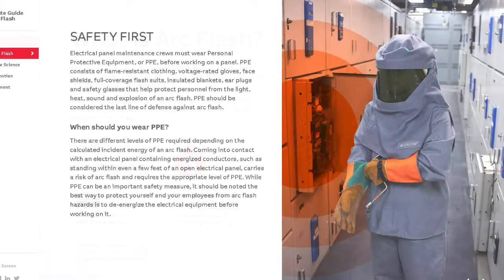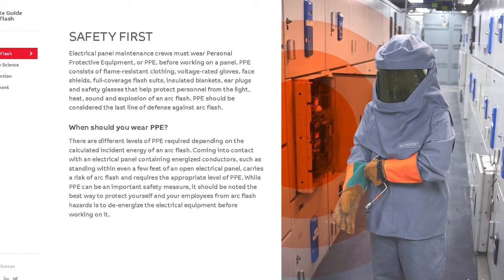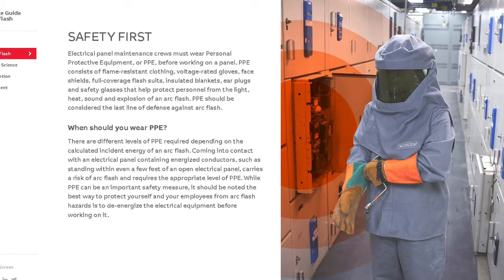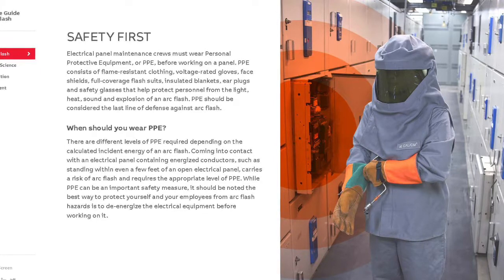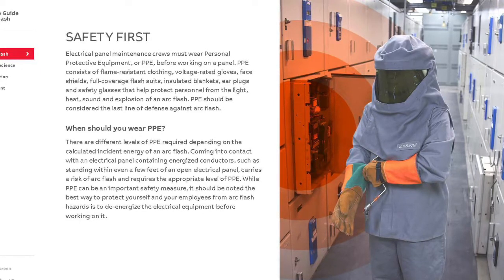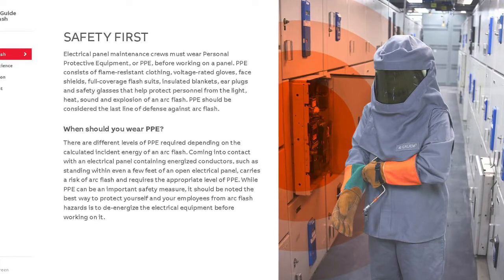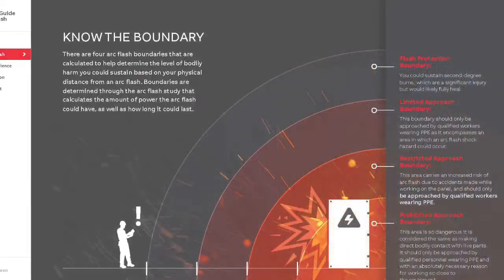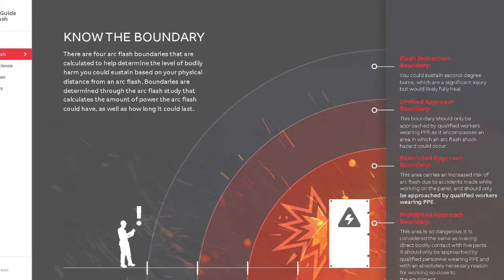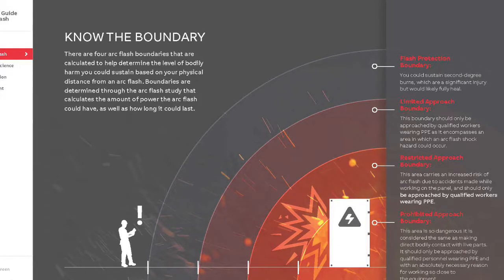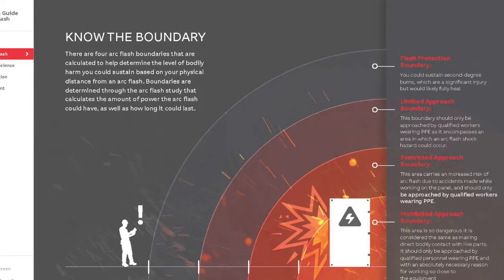There are different levels of PPE required depending on the calculated incident energy of an arc flash. While PPE can be an important safety measure, the best way to protect yourself from an arc flash hazard is to de-energize the electrical equipment before working on it. There are four arc flash boundaries calculated to help determine the level of bodily harm you could sustain based on your physical distance from an arc flash. Boundaries are determined through arc flash studies or using PPE category method tables.